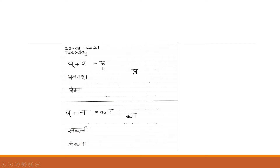The first set of Samyuktakshara examples: Prakash, Prem, Sabji, Kabja. Let us go through them again — Prakash, Prem, Sabji, Kabja.